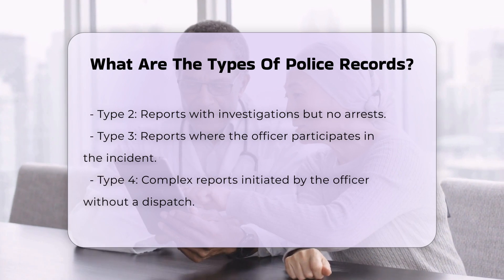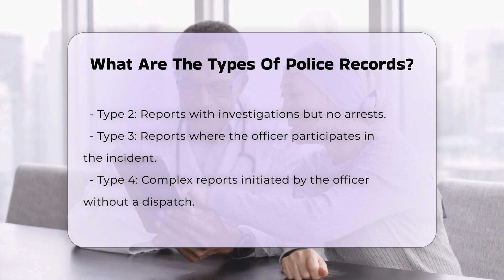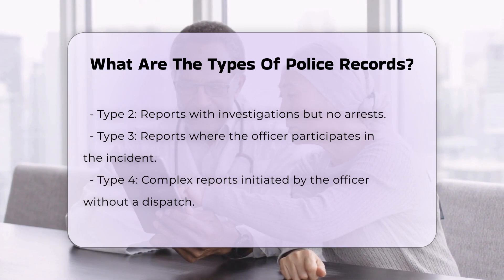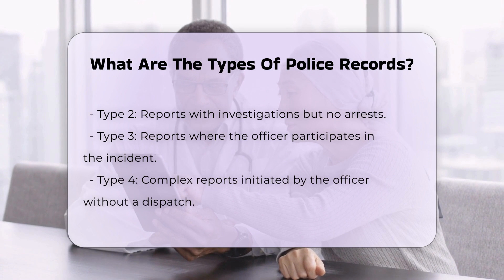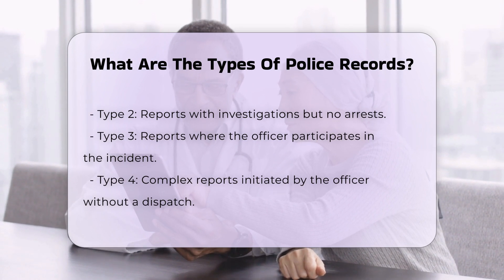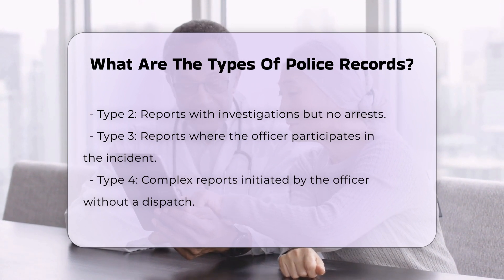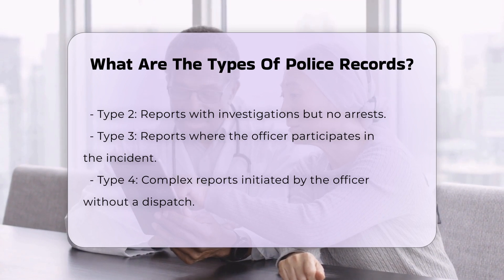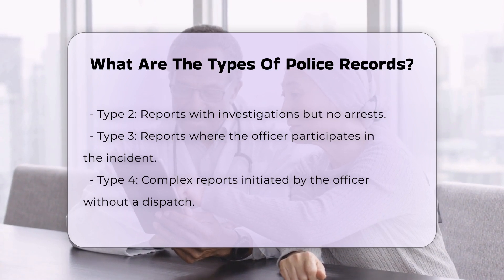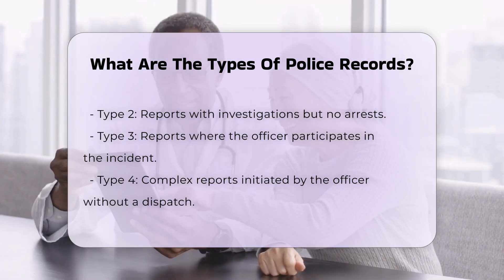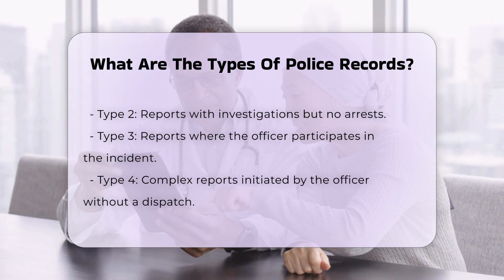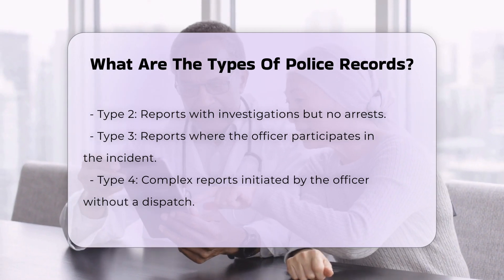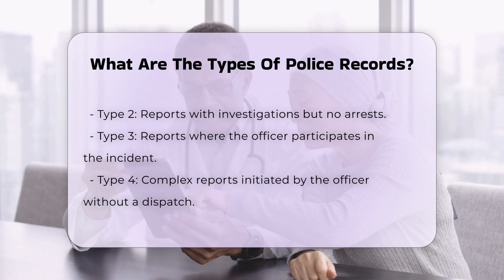Types of police reports based on officer involvement. Police reports can also be categorized based on the level of officer involvement. Type 1 reports are the most basic and involve recording the facts of an incident without any police investigation or arrest. Examples include incident reports for non-violent offenses and missing persons.